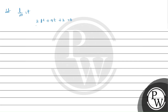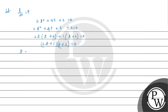Factorizing 2t² + 5t + 2 by splitting the middle term: 2t² + 4t + t + 2 equals 0. Taking 2t common from the first two terms gives 2t(t + 2) + 1(t + 2) equals 0, so (2t + 1)(t + 2) equals 0. From this, t equals minus 1/2 or t equals minus 2.